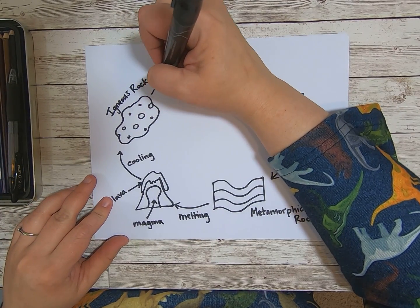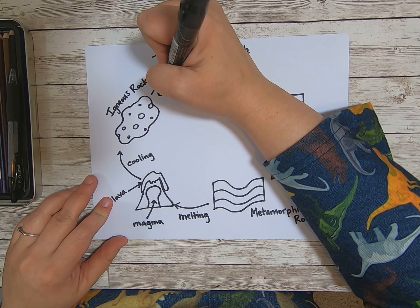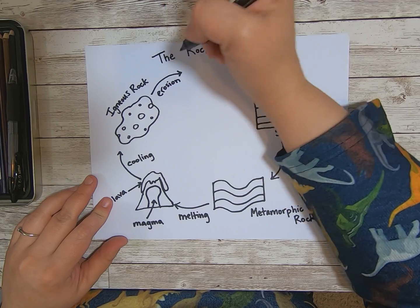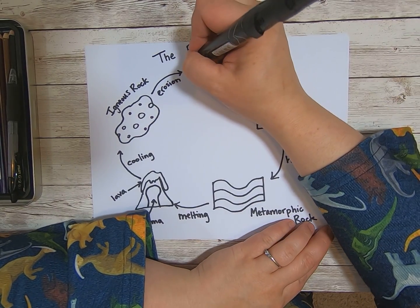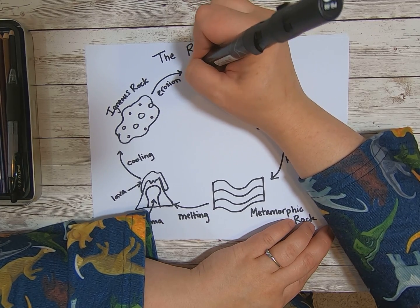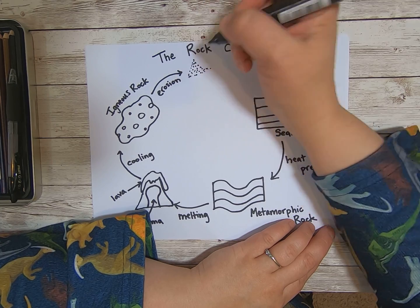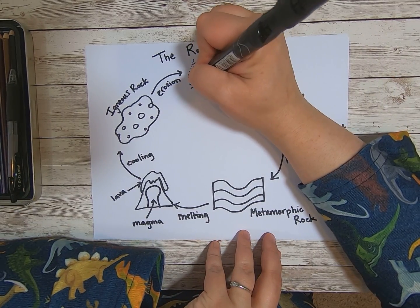Now my igneous rock, it's going to go through erosion. Erosion is a special word. It means the rock is breaking up into little teeny pieces. Erosion. And right here, here's my rock. Oh, it broke up into teeny tiny pieces, look at that. Teeny tiny pieces. We call those little teeny pieces sediments.